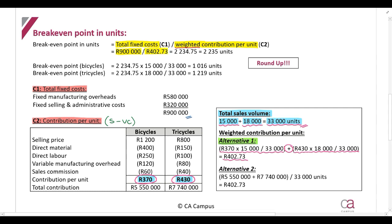As an alternative, you can first calculate the total contribution: take the contribution per unit and multiply by the expected units for each product. For bicycles, that's R370 multiplied by 15,000 units; for tricycles, R430 multiplied by 18,000 units. Calculate the total contribution, then divide by the total expected sales in units, and that also gives you the weighted contribution per unit. Choose either method — don't do both.